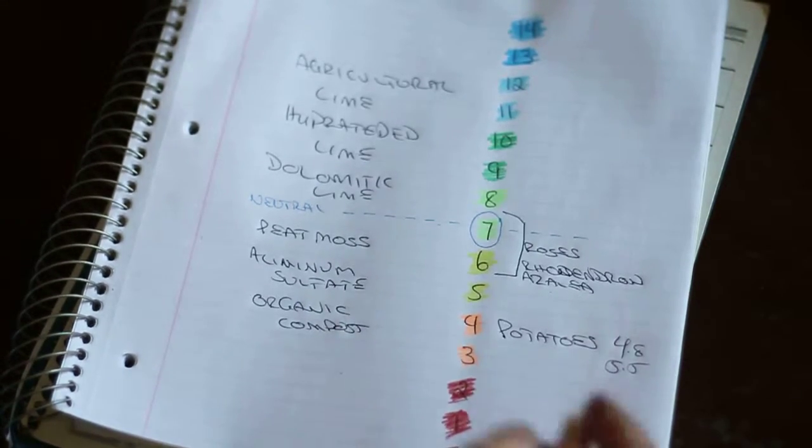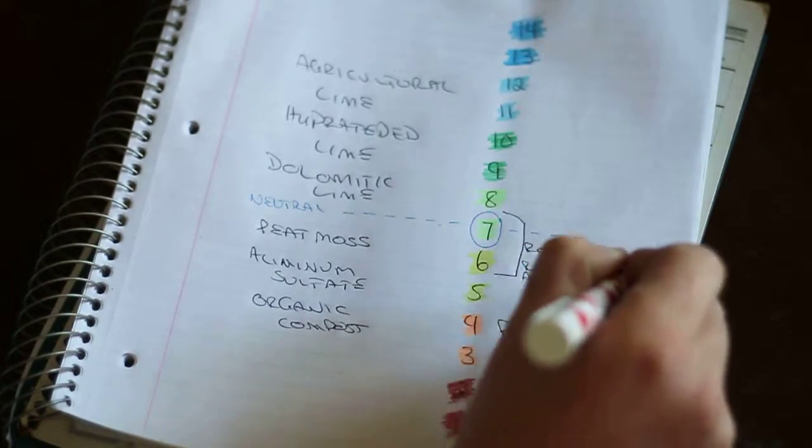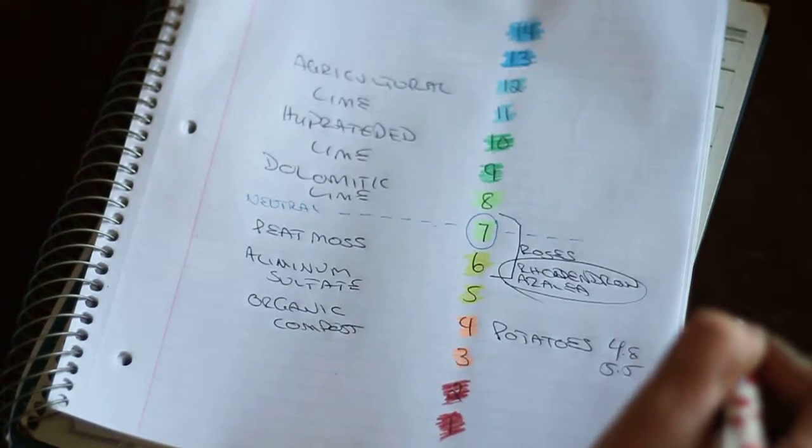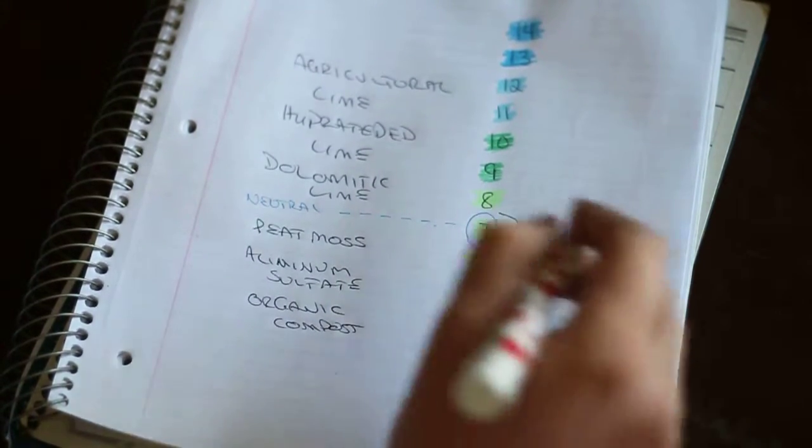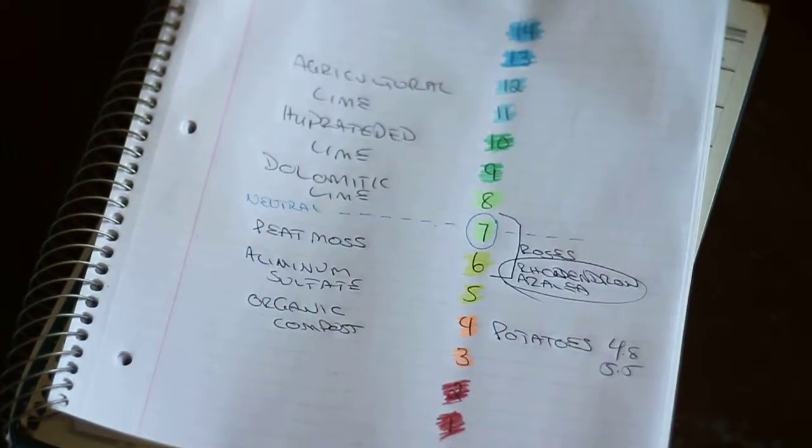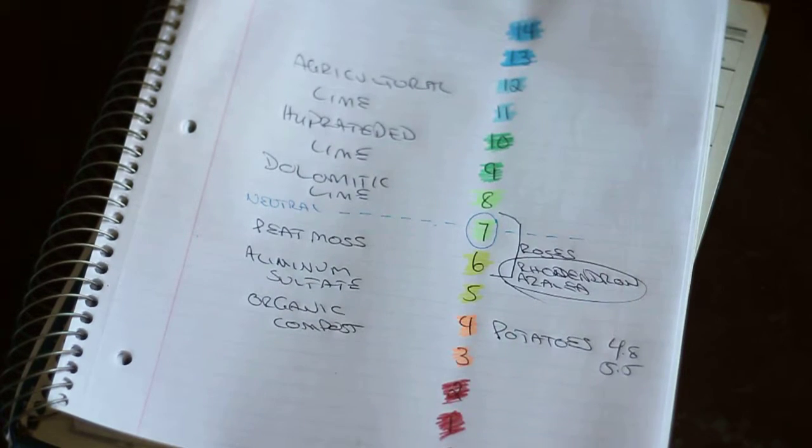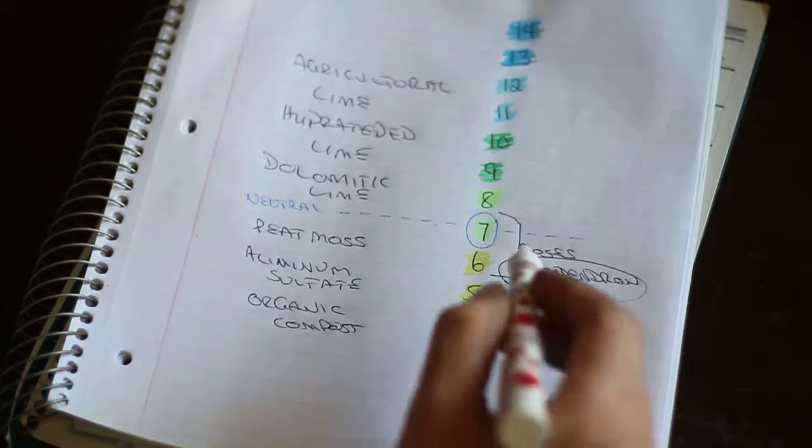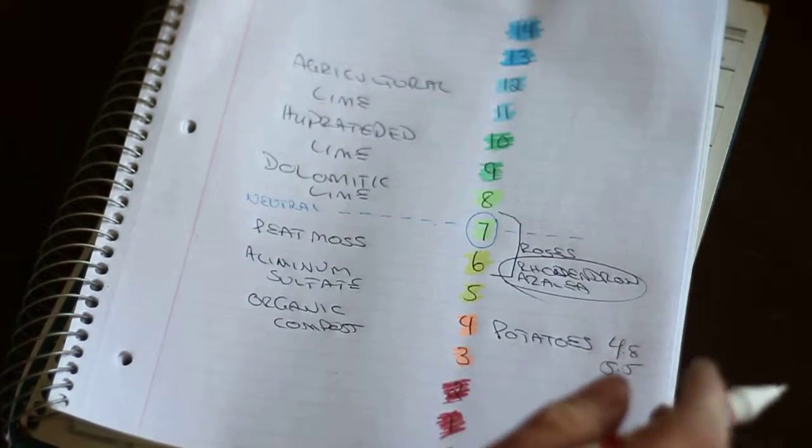Most of your fruits are going to also fall sort of in this general 5.5 to 7 range. So your blueberries, your raspberries, grapes, gooseberries, all that kind of stuff. Peppers, strawberries as well, those tend to be slightly towards that 5.5 to 6.5 range.